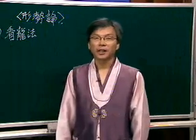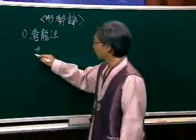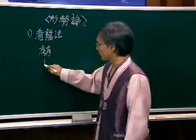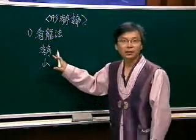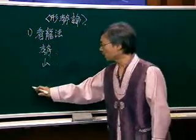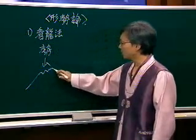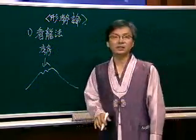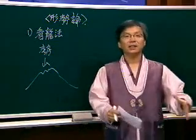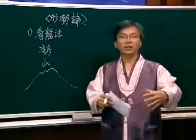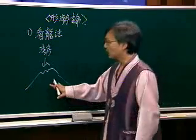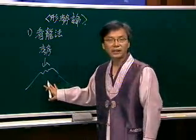여기서 세라고 하는 것은 세산을 의미합니다. 세산은 한자 그대로 기세가 있는 산을 의미합니다. 지리산, 태백산, 덕유산, 설악산, 북한산, 금정산 같은 큰 산을 세산이라고 합니다.